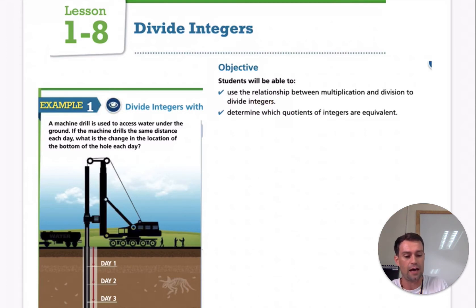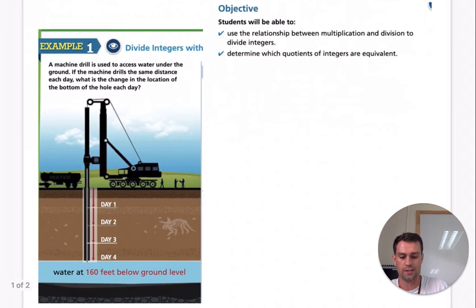So we're going to be looking at the relationship between multiplication and division to divide integers. And we are also going to determine which quotients of integers are equivalent. All right, so let's look at this first example here.